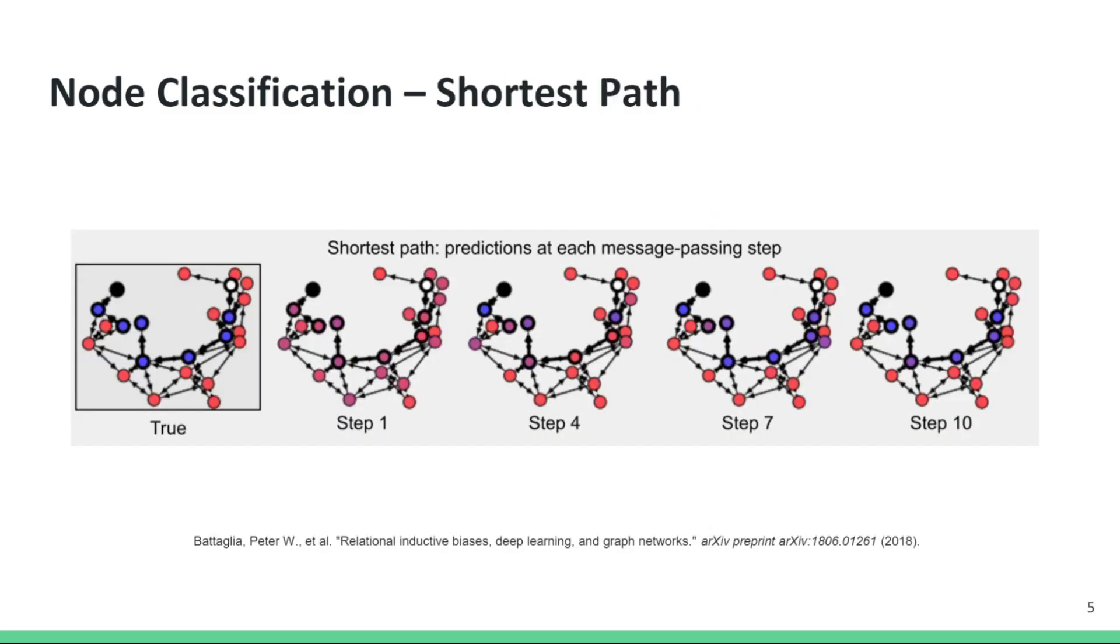Another example of node classification is identifying the nodes in a graph that lie on the shortest path between two nodes. For example, in the image on the left, the nodes on the shortest path between the white node and the black node are shown in blue. A graph neural network can be trained to identify the nodes on the shortest path. In practice, we do not need a neural network for this particular task. However, neural networks can be used to provide approximate solutions for more complex problems on graphs, such as the traveling salesman problem.